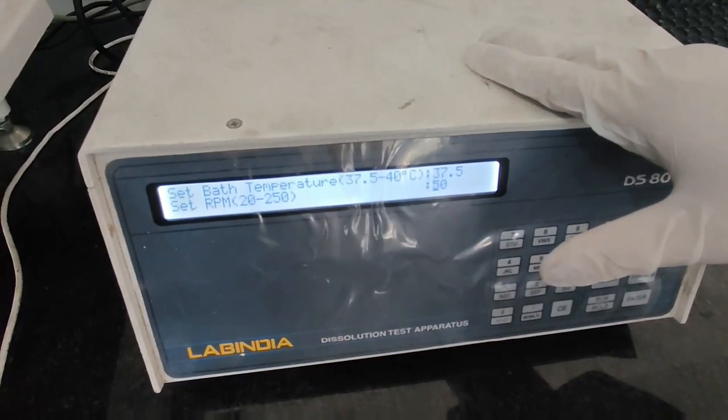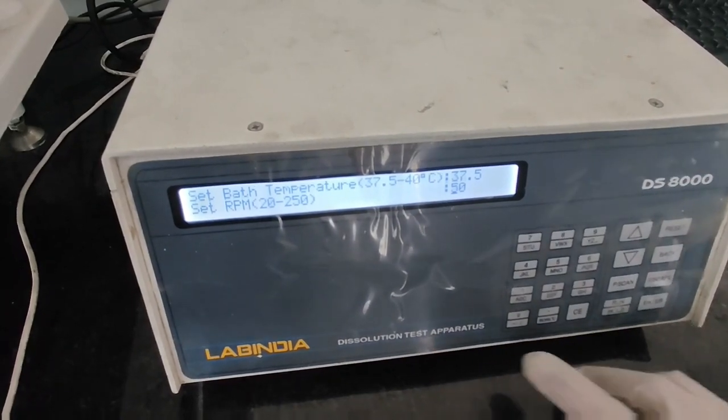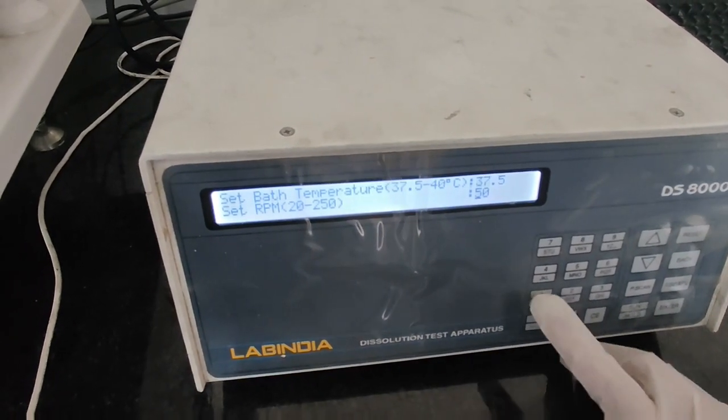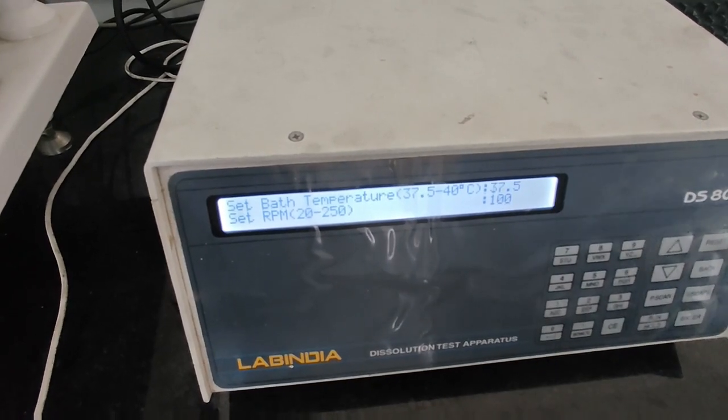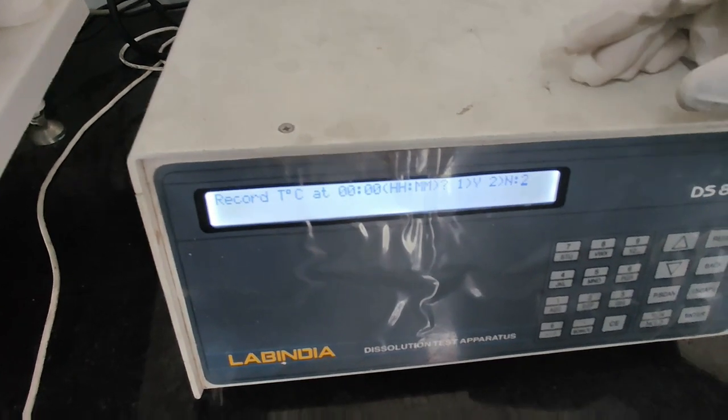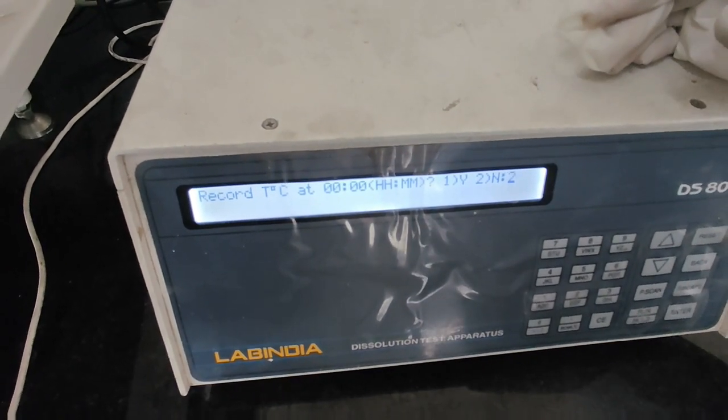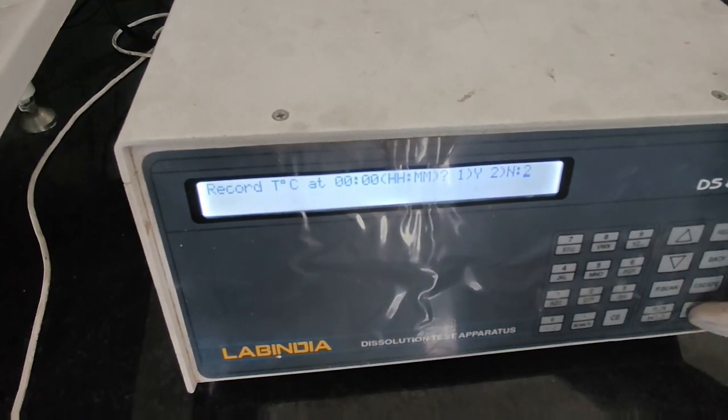Then RPM. I want to conduct the study at 50 RPM. It is already entered. If you want to conduct it at 100 RPM, for example, I will show you how to change. Like this. Then press enter. Then whether you want to record the temperature at 0 hour or minute, I don't want to record it, so I will press enter.